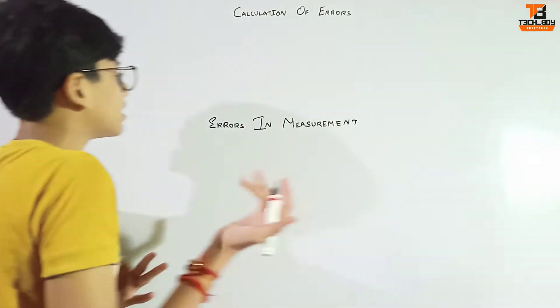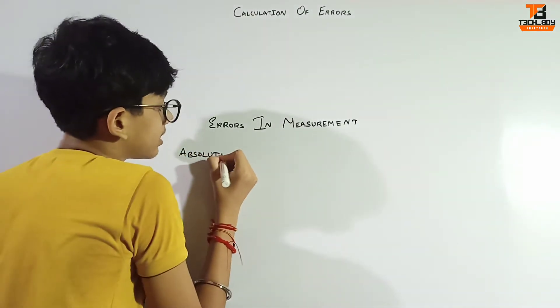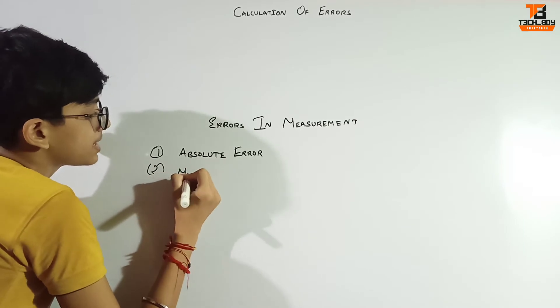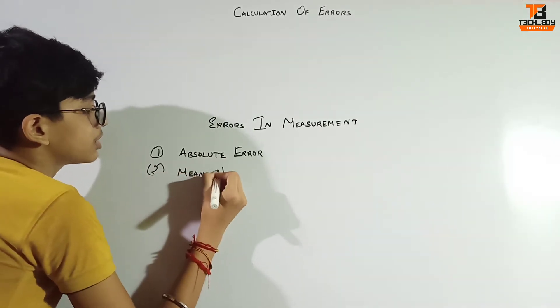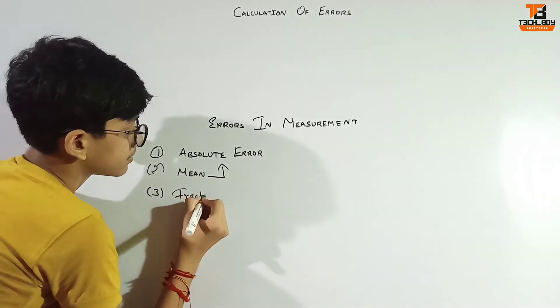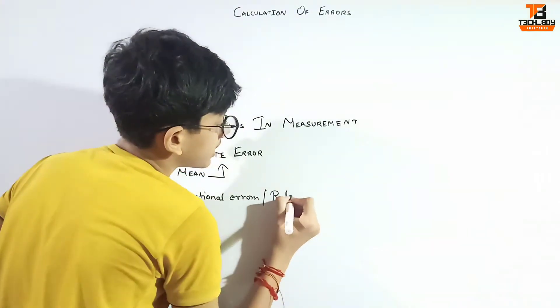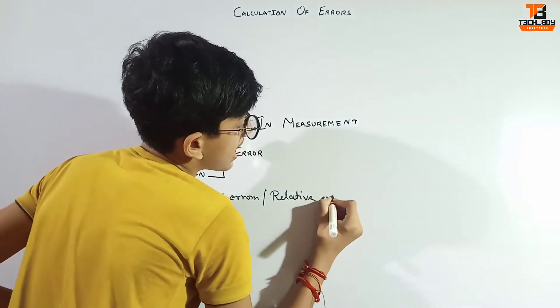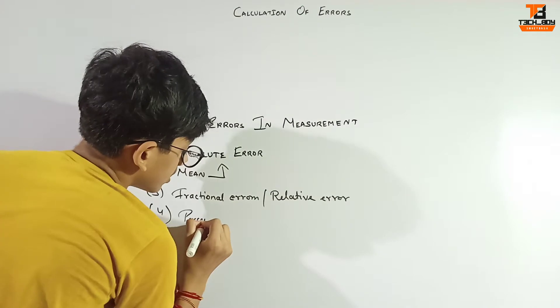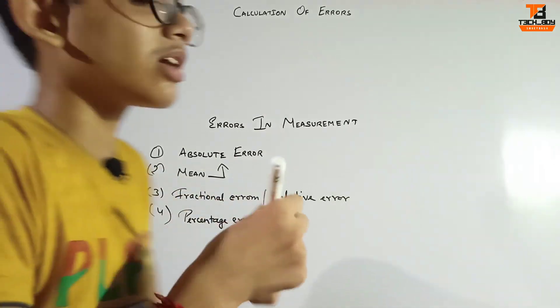Calculations of error. Today we will talk about absolute error first, and the second will be mean absolute error. Third, fractional error or relative error, and in the last fourth we will talk about percentage error. So these are the four things we are going to talk about in today's video.